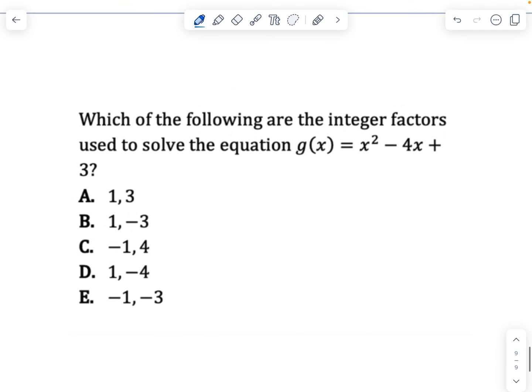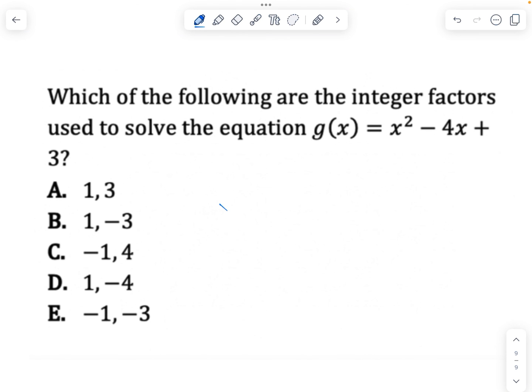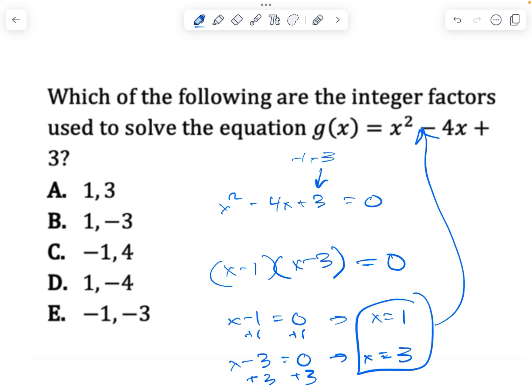Last problem type. This is factoring. Which of the following are the integer factors used to solve the equation x squared minus 4x plus 3 equals 0? You're going to find factors of 3, 1 and 3, that are equal to negative 4 when you add them together. Let's make those both negative. They both multiply to positive 3 and add up to negative 4. So (x minus 1)(x minus 3), you're going to plug them into this format and then make them equal to 0. x minus 1 is going to equal 0 or x minus 3 is going to equal 0. That gives you x equals 1, if you do plus 1 here, and x equals 3 if you do plus 3 here. If you're not sure, you can plug these back in and check to make sure do these two numbers make this equation equal to 0. And in this case, they do.